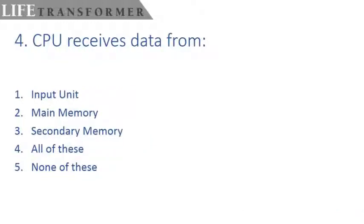Now the next question. CPU receives data from? From where does CPU receive the data? It receives from input unit or from main memory or secondary memory or from all of these or from none of these. Answer is CPU receives data from the main memory. Actually main memory is also known as primary memory.